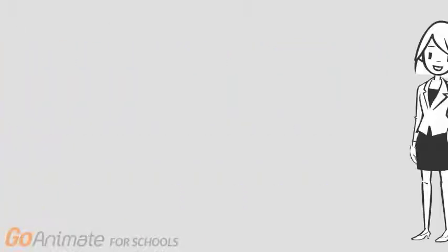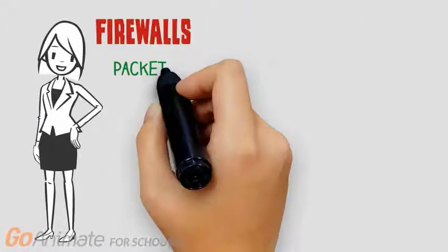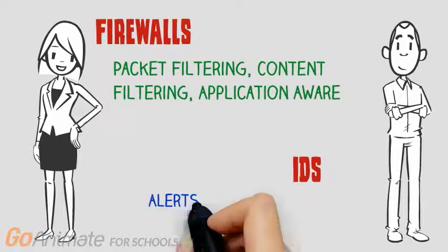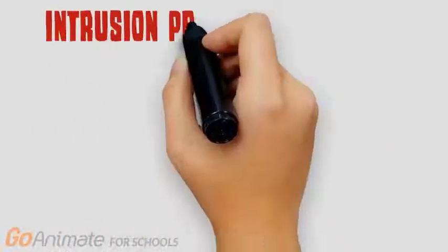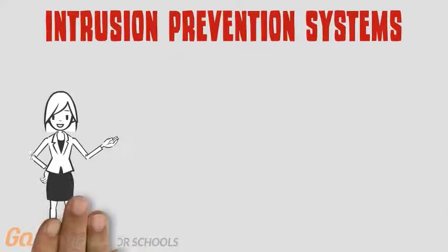Let's compare intrusion detection systems and firewalls. The main difference is that firewalls filter packets based on rules, while IDS's alert the user to potential intrusions or malware in the network and the user is responsible for responding. Firewalls serve as a wall which packets must go through to get into the network, while IDS's monitor what is on the network and its behavior.